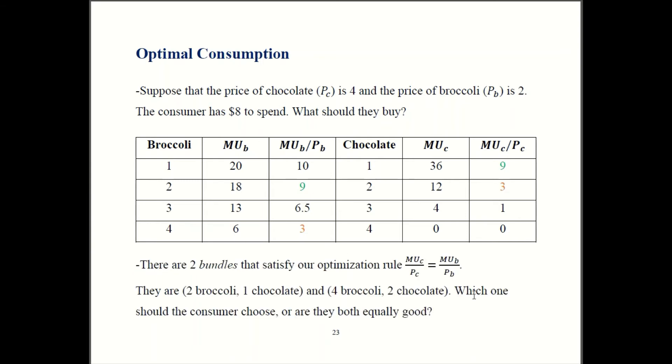So you got to look for parts of the table where that is true. It happens at two points. So if you have two broccoli and one chocolate, shown here in green, marginal utility per dollar is equal. However, if you have four broccoli and two chocolate, you also have the same marginal utility per dollar. Three and three, shown here in orange. So there are two bundles that seem to satisfy this rule, equal marginal utility per dollar.